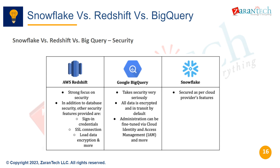Snowflake provides advanced security capabilities like automated threat detection, while Redshift and BigQuery offer standard security features. Snowflake also offers robust access control, encryption, and data governance capabilities.